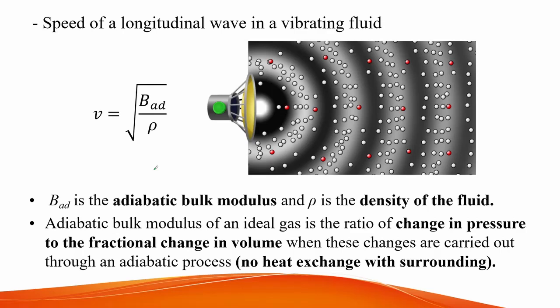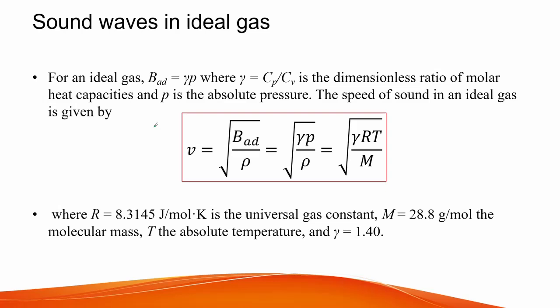For sound traveling across a fluid, the wave velocity depends on the bulk modulus and density of the fluid. The adiabatic bulk modulus of an ideal gas is the ratio of change in pressure to the fractional change in volume during an adiabatic process, meaning no heat exchange with the surroundings. The speed of sound in an ideal gas can be expressed as the square root of the molar heat capacity ratio times the universal gas constant times absolute temperature in Kelvin, divided by the molecular mass.